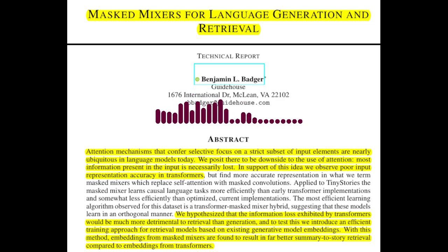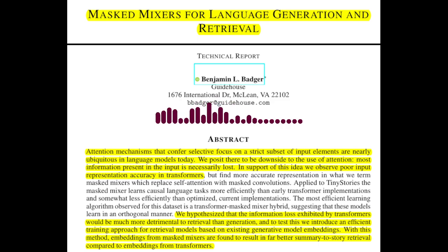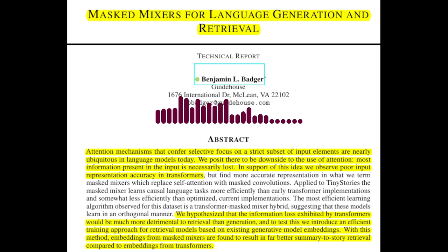Finally, the paper explores a hybrid architecture that combines transformers and masked mixers. A transformer-mixer hybrid, where a masked convolution is inserted after the transformer layer, can achieve better performance than either architecture alone. This suggests that transformers and masked mixers might learn in complementary ways, and combining them can lead to improved efficiency.